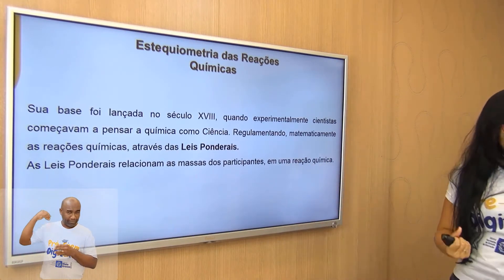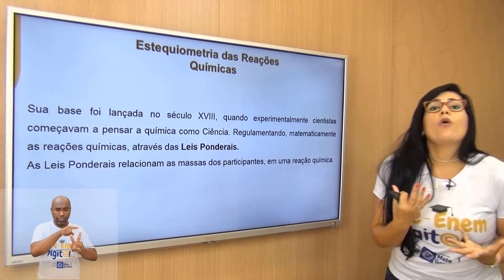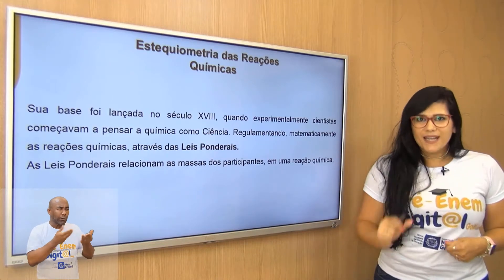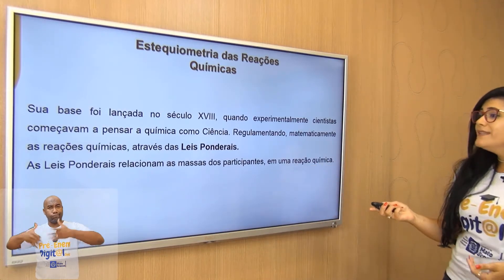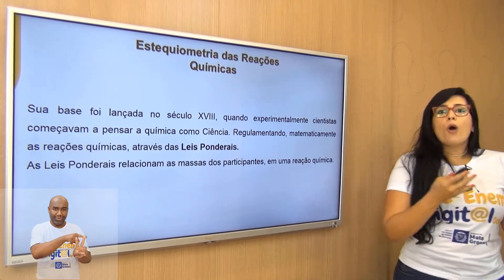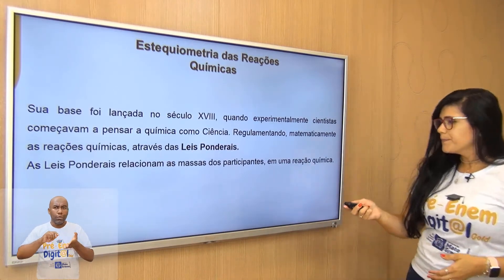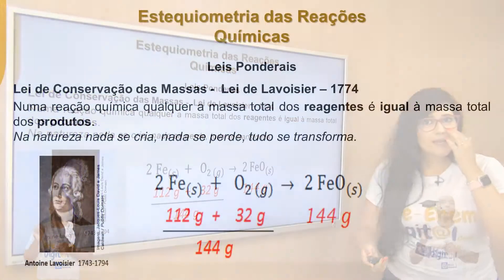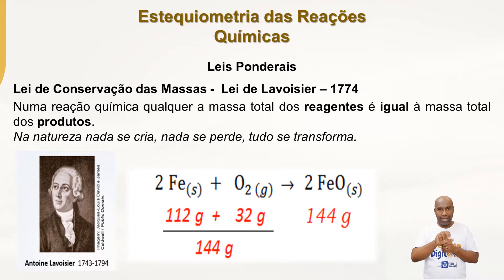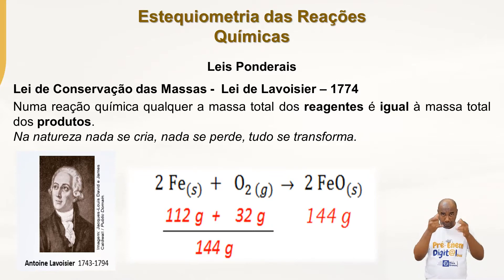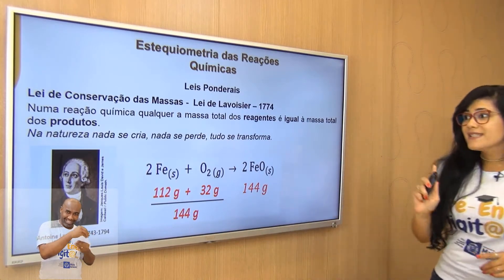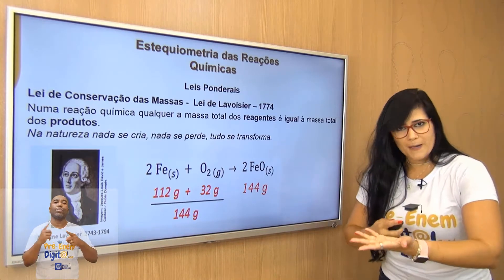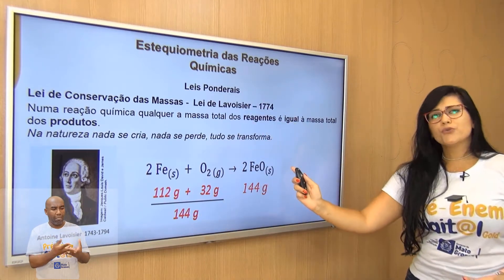Lá no século XVIII, dois grandes cientistas começaram a pensar a química como ciência — as leis ponderais. A primeira que rege as reações químicas é a lei de Lavoisier. O que Lavoisier diz? Que numa reação química qualquer, a massa total dos reagentes é exatamente igual à massa total nos produtos. Tudo que eu tiver em quantidade nos reagentes tem que estar no final nos produtos — na natureza nada se cria, nada se perde, tudo vai se transformar. Reagentes, tudo antes da seta, vai se transformar em produtos, o que está depois da seta.